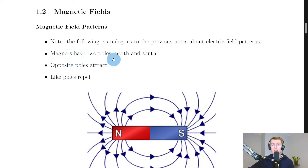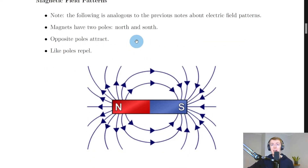First of all, magnets have two poles — north and south — just like there are two types of electric charge: positive and negative. I like to think about north poles as being like positive charges and south poles as being like negative charges. Just like opposite charges attract and like charges repel, we have opposite poles attract and like poles repel as well.